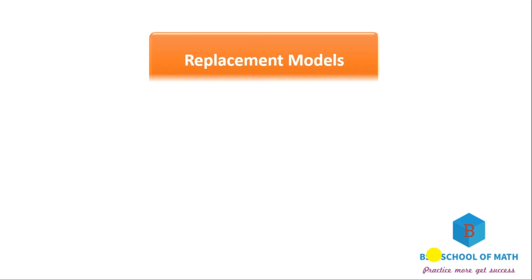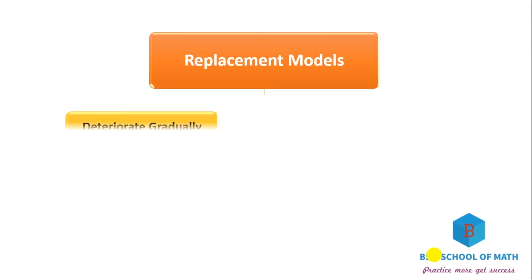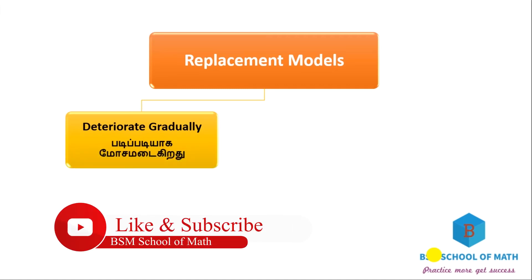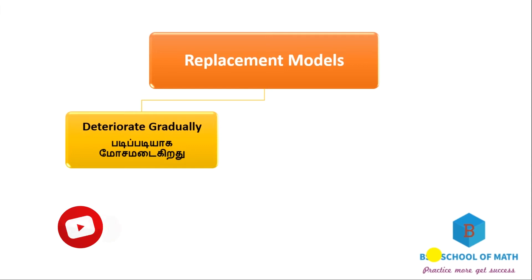Replacement models — how many models are there? In the first model, the item deteriorates gradually, step by step. We will start with gradual failure and then move to a certain method for sudden failure.